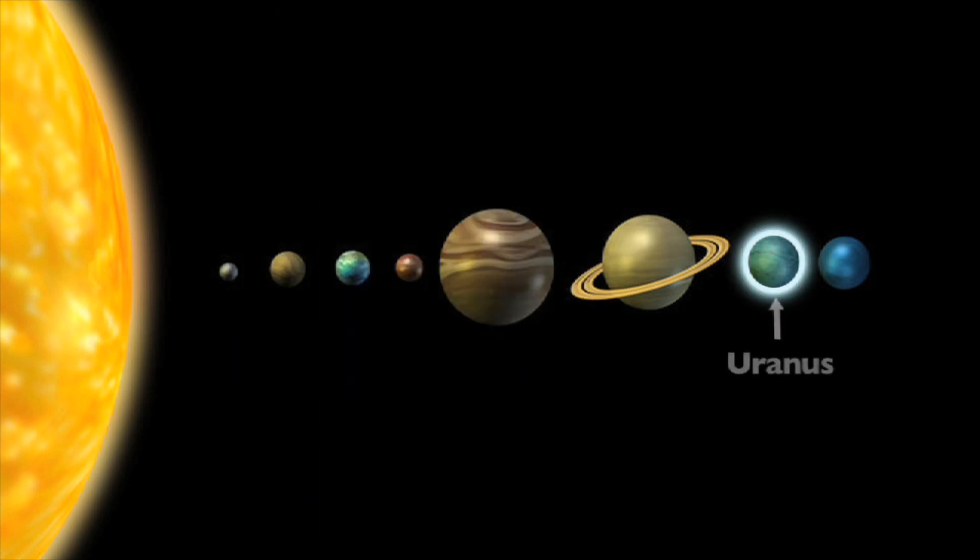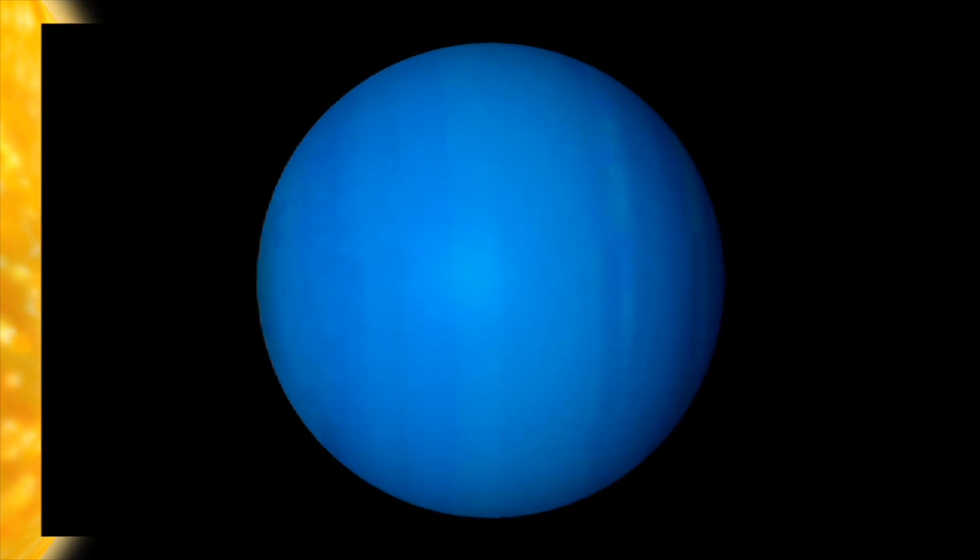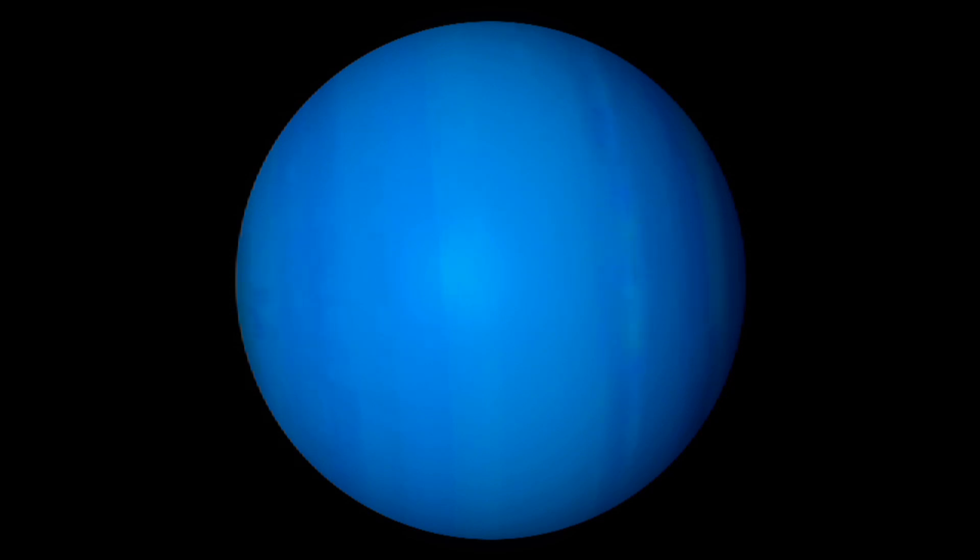Uranus is the seventh planet from the sun and the first planet discovered by telescope. Unlike other planets, Uranus rotates on its side like a barrel. This causes one side of the planet to be in total darkness for much of its orbit.